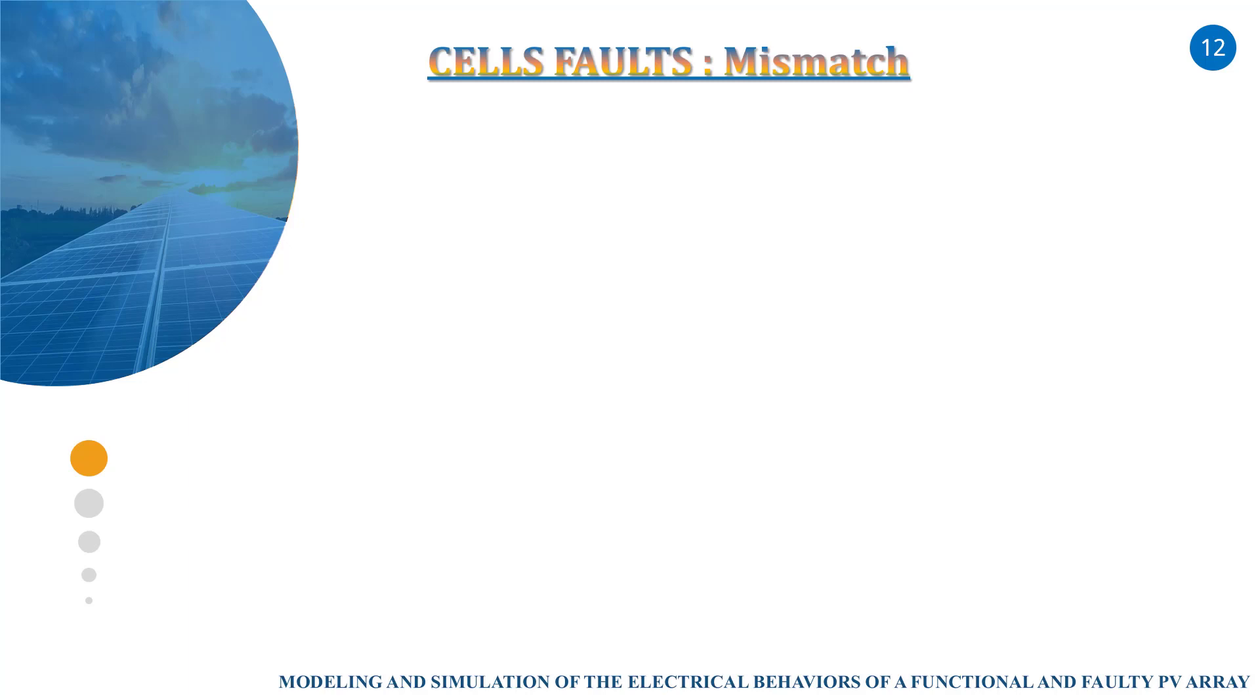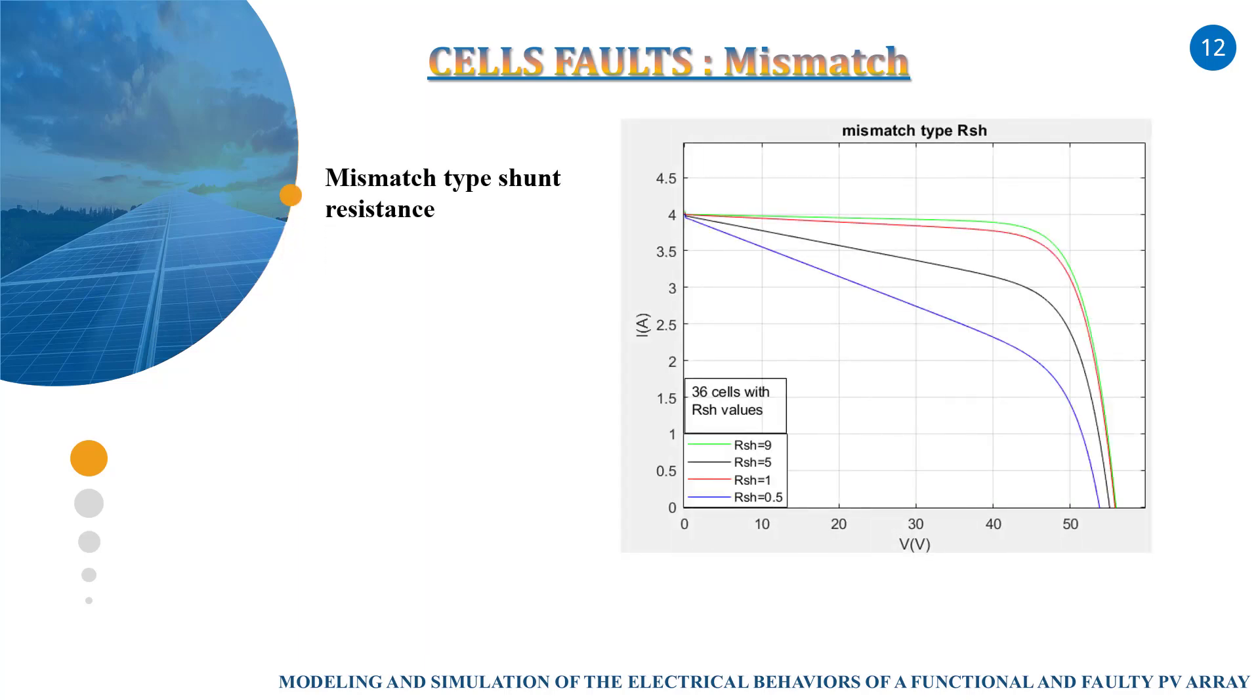We begin by cell fault. We have the mismatch. The mismatch is the most frequent fault caused by grouping cells with non-identical current voltage characteristics. In this figure, we have 36 cells with a mismatch shunt resistance.